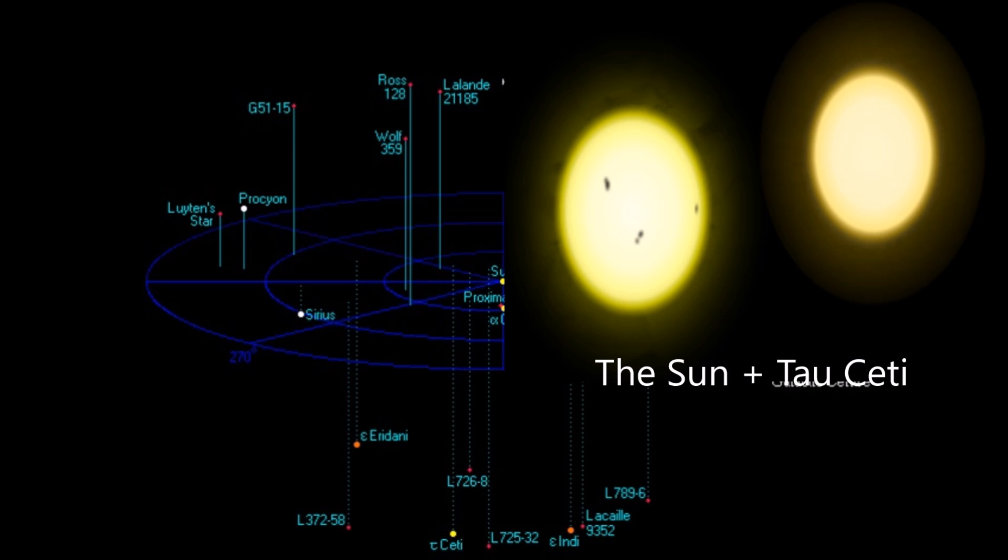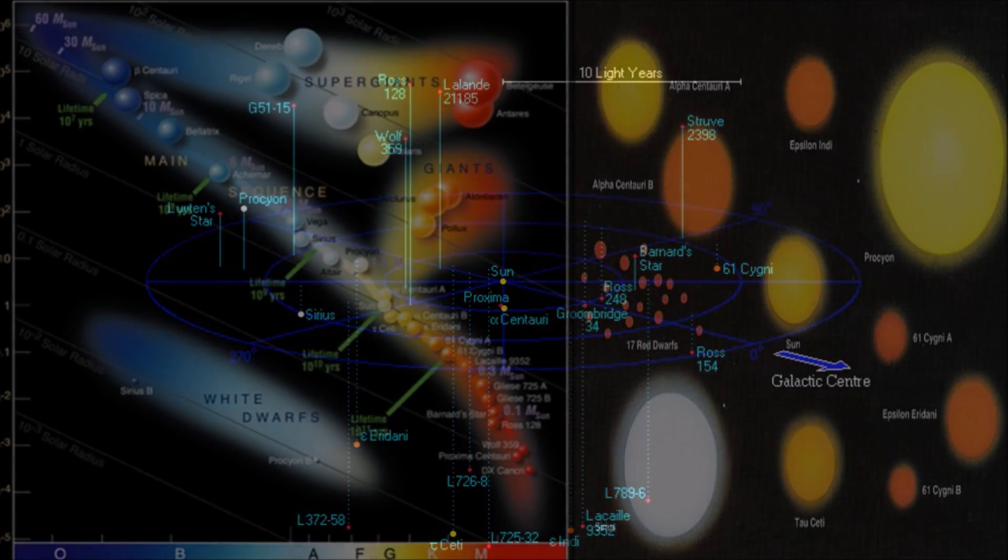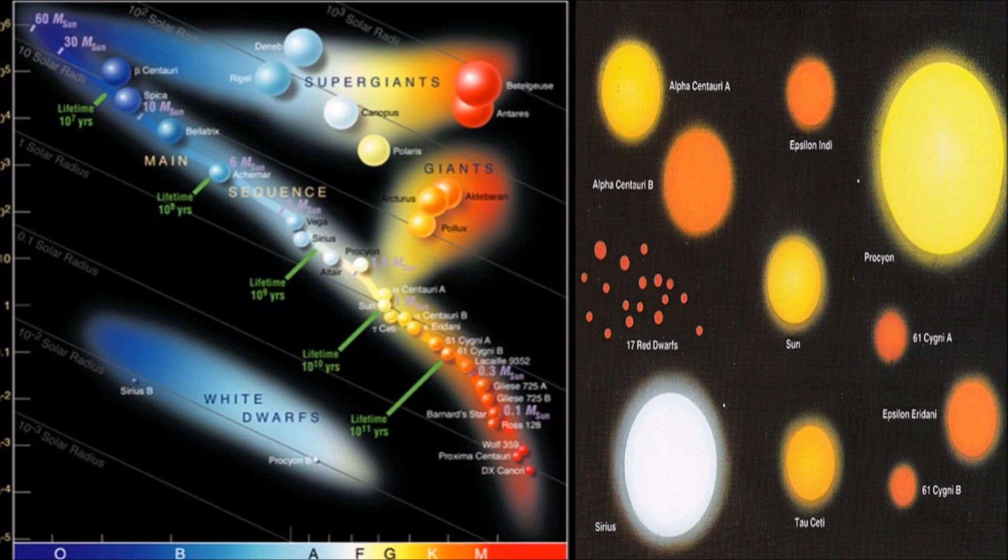Tau Ceti actually has five planets around it, maybe more, so maybe a lot of life there. I have actually channeled a fly from there. We already know there's life on Alpha Centauri and Sirius - much amphibian life and reptilian also. On Sirius, it's both humanoid and amphibian life.